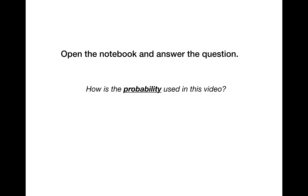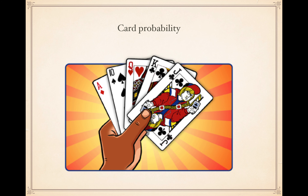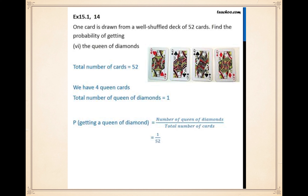If you need more time you can pause. Now we're going to look at card probability. Last lesson we looked at some card questions. There are 52 cards in a deck — if you have a deck of cards you can try some of these at home. First question: one card is drawn from a well-shuffled deck of 52 cards. Find the probability of getting the queen of diamonds. The total number of cards is 52 — there is only one queen of diamonds — so we write this as one over 52. Very low chance.